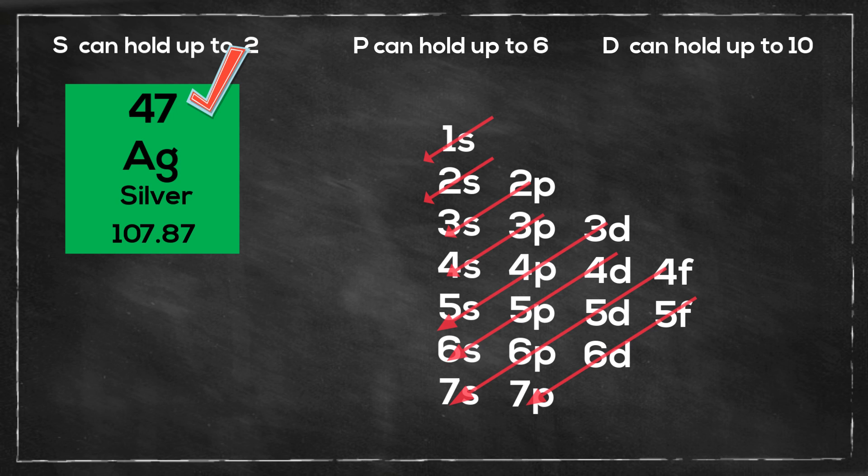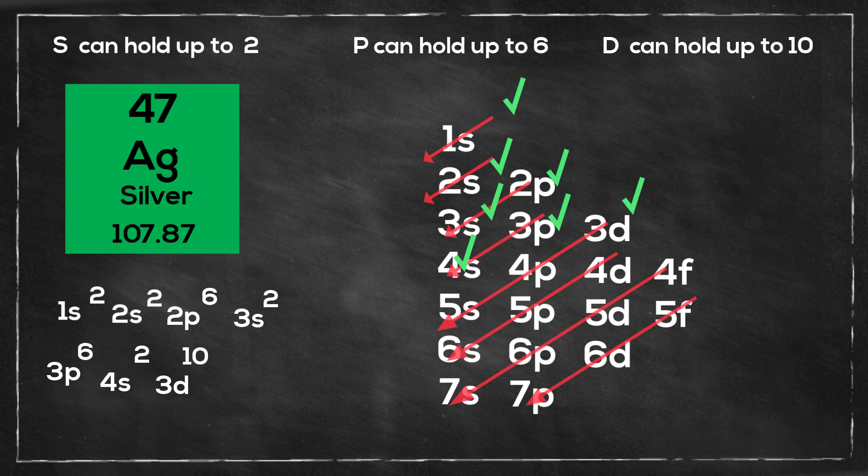You start at 1s, it has 1s2, then 2s2, 2p6, 3s2, 3p6, 4s2, 3d10, 4p6.